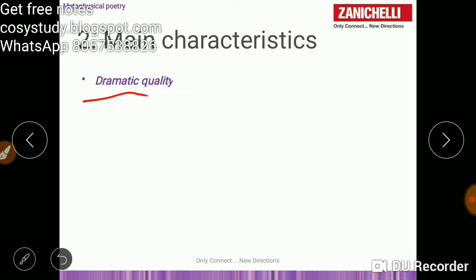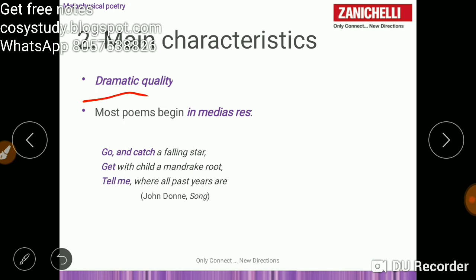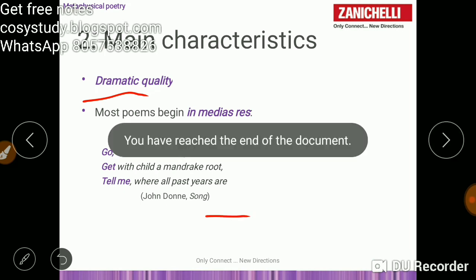Dramatic quality. Most poems begin in medias res. 'Go and catch a falling star, get with child a mandrake root, tell me where all past years are.' John Donne, it was a song by him.